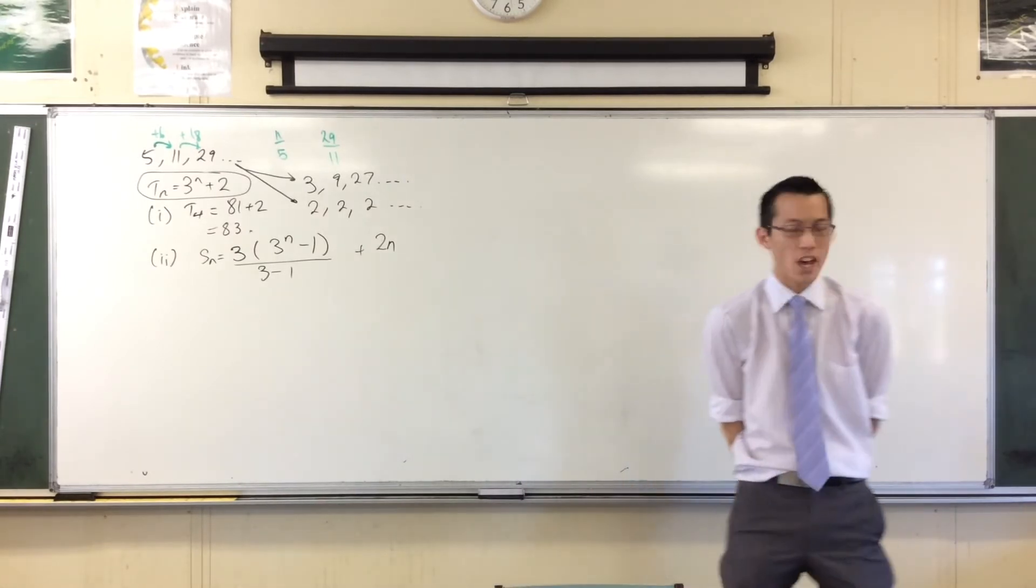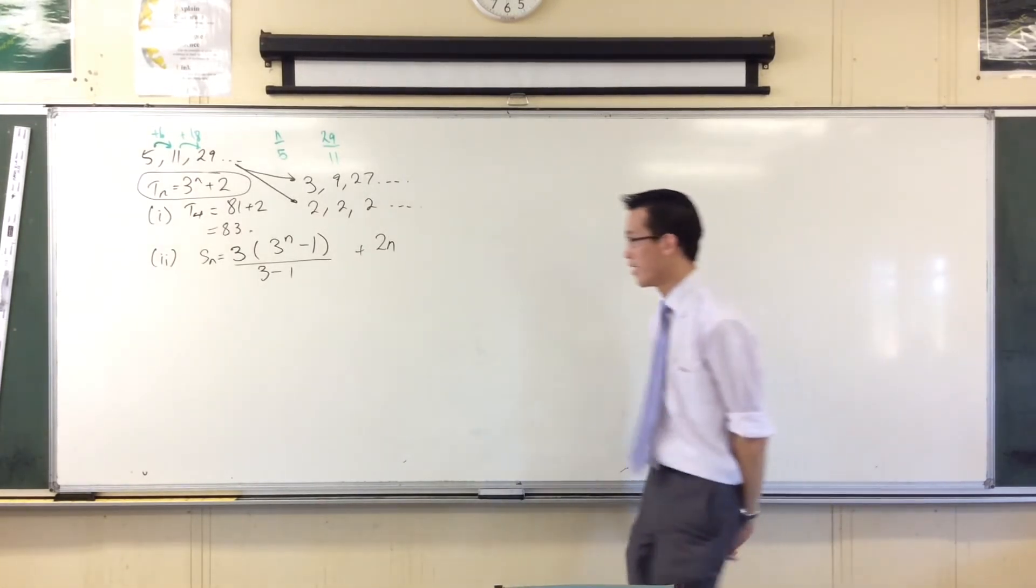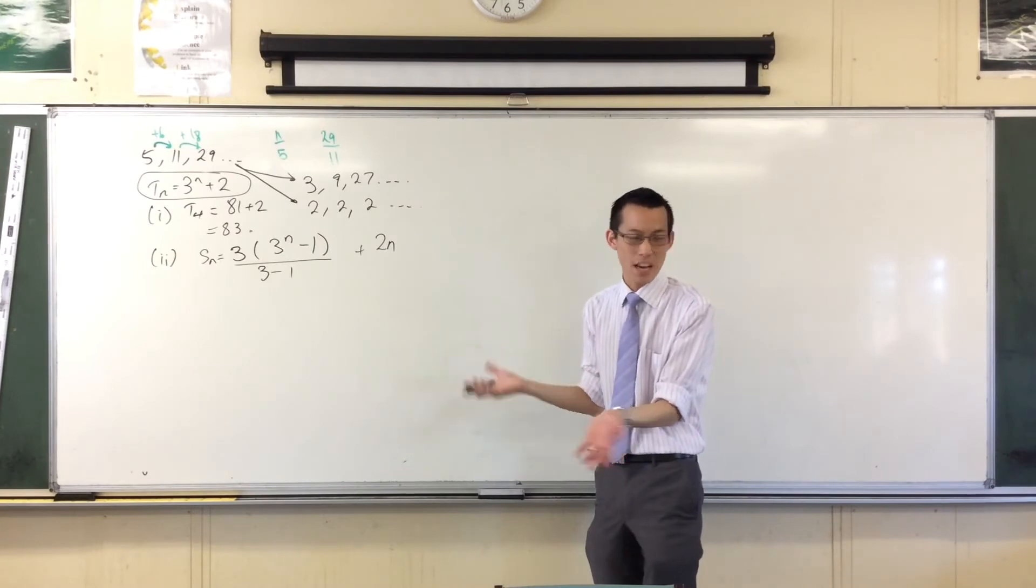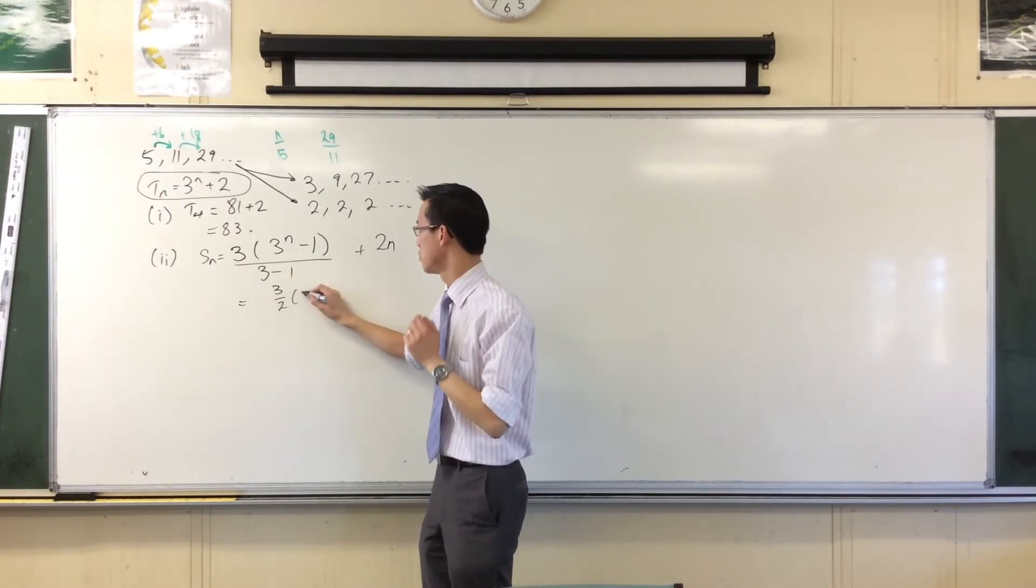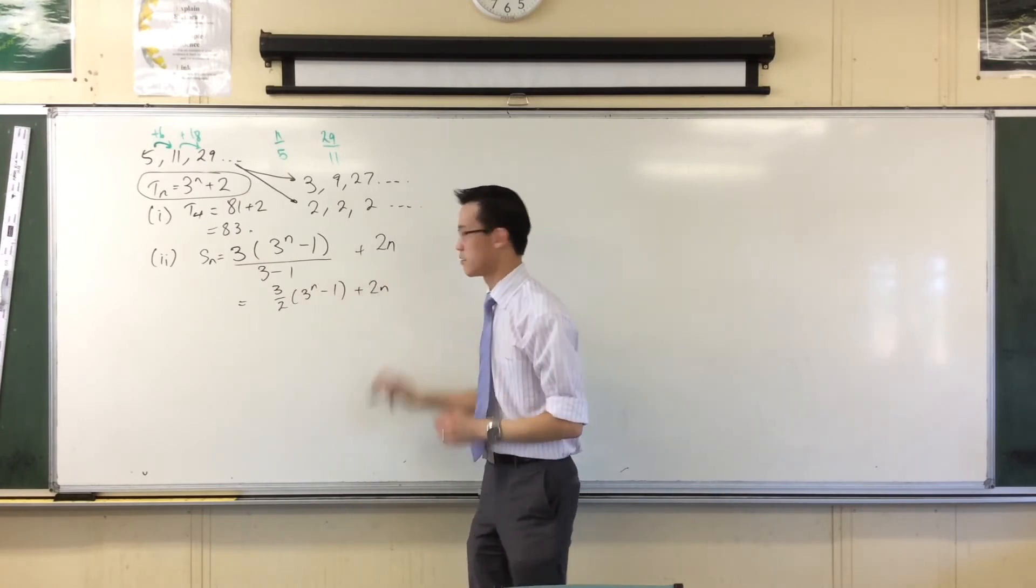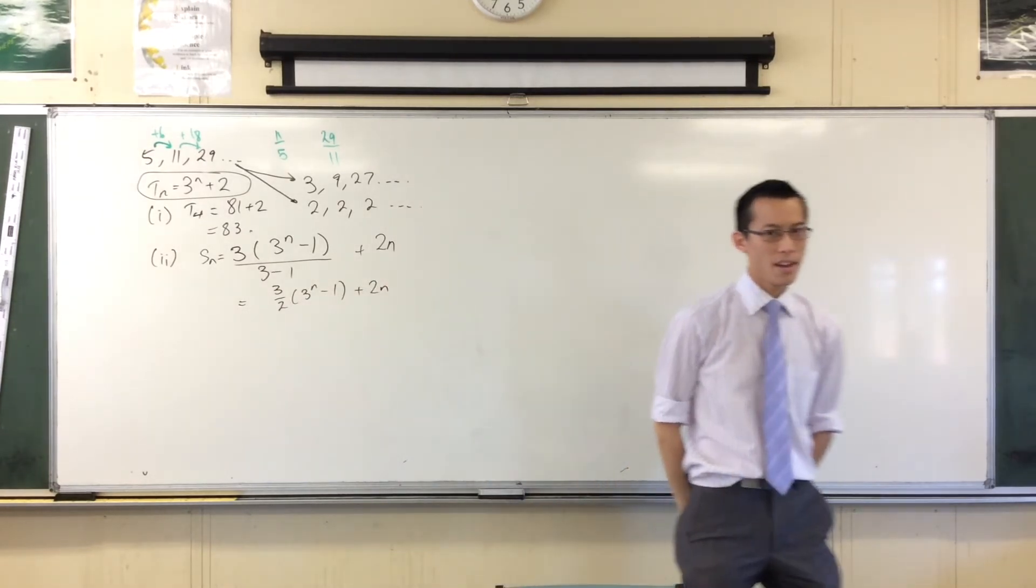The sum of the first n terms where all of the terms are 2 is just going to be 2n. Like if I have 10 terms, then the sum is 20. That's it. I mean, I'm going to simplify. Let's see. So this is 3 over 2 times (3^n - 1) plus 2n. There you go.